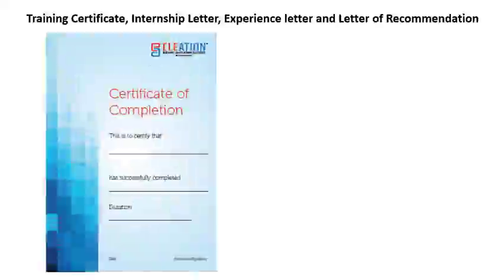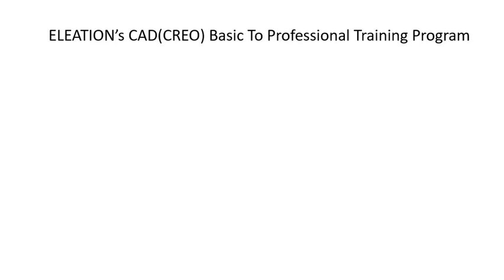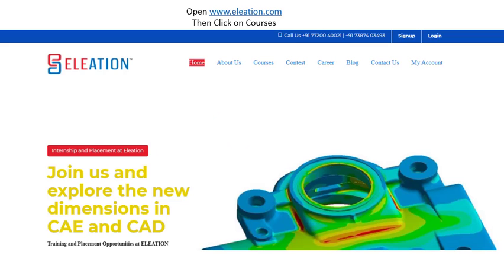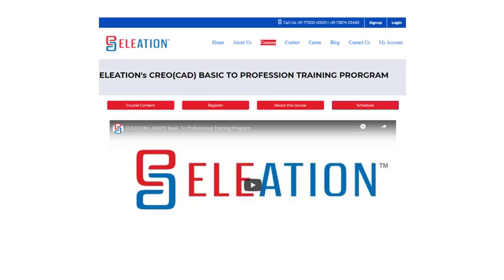All participants will receive a training certificate, an internship letter, an experience letter, and a letter of recommendation. To begin the registration process, open www.eleation.com, click on Courses, and under Courses, click on the Eleation CAD Creo Basic to Professional Training Program.